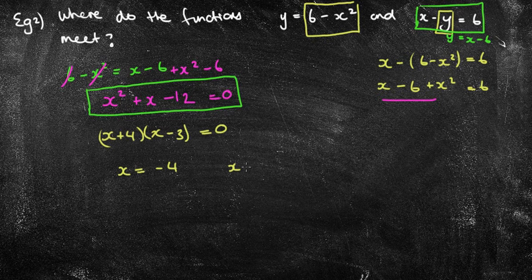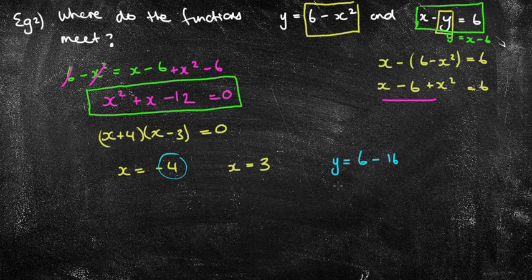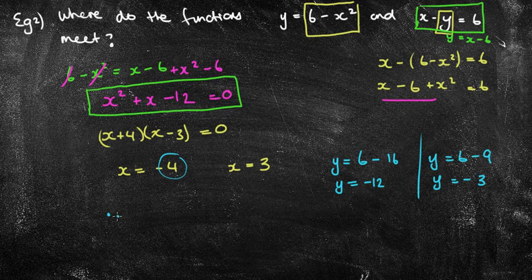Of course, I need to sub it back in. And again, it doesn't matter which of the two equations that I sub those back into. I can do the top one. I'm going to use the first one. So I'm going to put here y is equal to, for the first one, 6 minus x squared is 16. Therefore, y equals negative 12. And the second one, we've got y equals 6 take away your x squared is 9, and that will give you equals negative 3. Therefore, my solutions are negative 4 comma negative 12 and we have positive 3 and then negative 3.